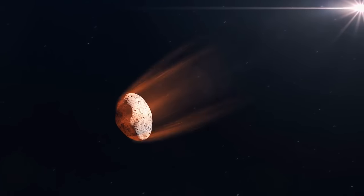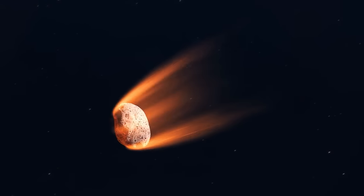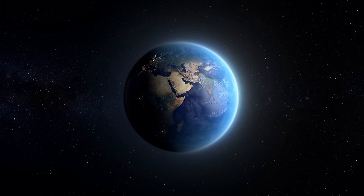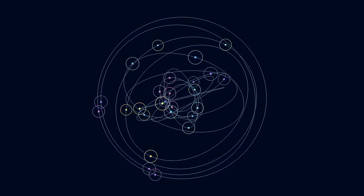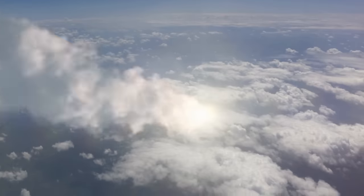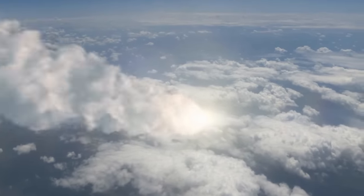The asteroids, therefore, do not target us when they are on a collision course, but simply come close to the Earth's orbit when they are on their own, usually very irregular orbits around the sun. An impact wouldn't be a nasty attack from space. It would just be a silly coincidence.